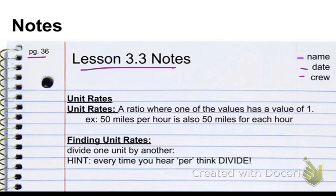Unit rates is a ratio where one of the values has a value of 1. Basically, we set a value against 1. My big example is 50 miles per hour. Now, think of miles per hour, liters per gallon, feet per second, chicken wings per order, you know, calories per serving.